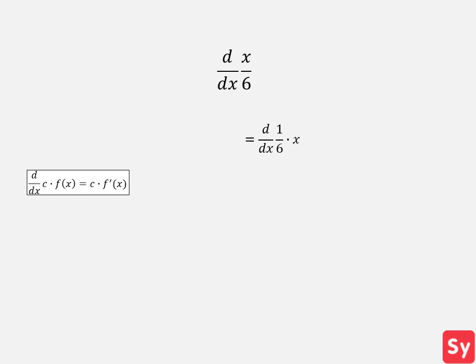This now equals 1/6 times the derivative of x. Since we computed the derivative of x last example, we won't go through the steps to compute it again. This equals 1/6 times 1, which simplifies to 1/6, our answer.